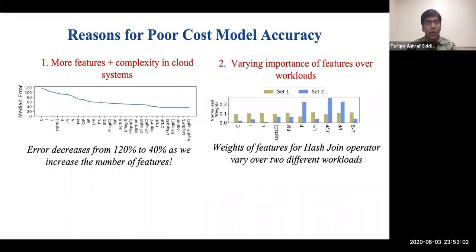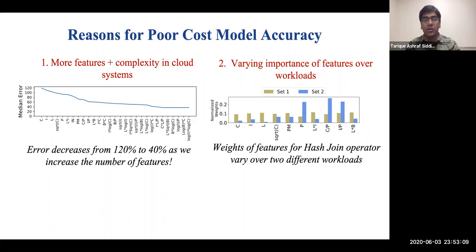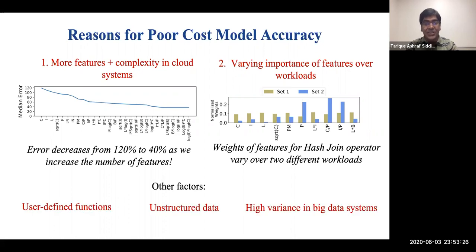Another key reason is that in traditional cost models, the rates of features typically remain constant for a given operator regardless of the context or workload in which they occur, and they are tuned or benchmarked once every many years. In contrast, we found that the optimal rates of features for operators, such as the hash join shown in this figure, vary drastically depending on workloads or the subplans in which they occur. Additionally, the abundant use of user-defined functions, unstructured data, and fast-changing infrastructure in big data systems make it further hard to manually model the runtime behavior of physical operators.